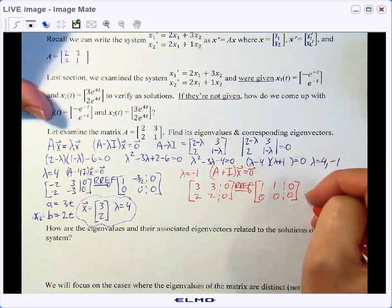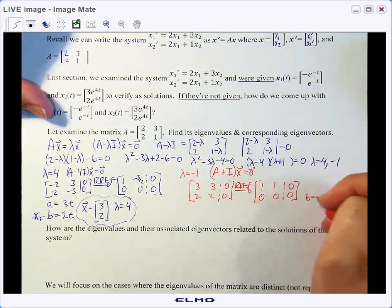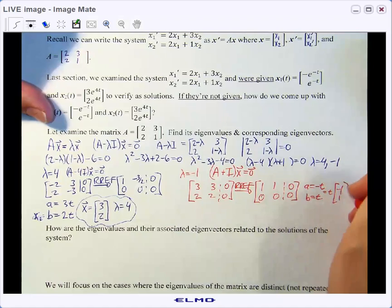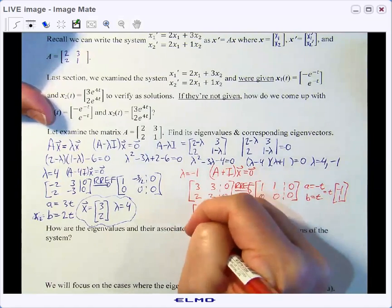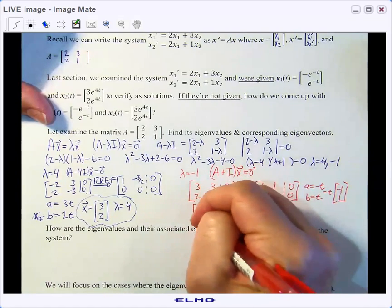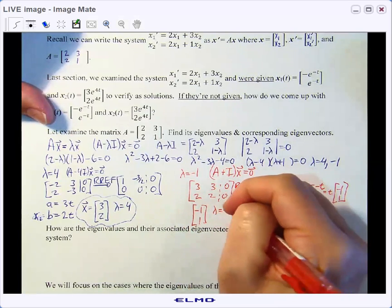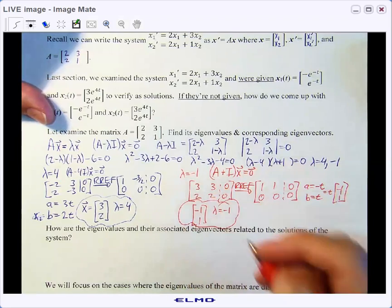Therefore, my eigenvector is going to be t and negative t. Or in other words, t times negative 1, 1. So our eigenvector here is negative 1, 1. And that corresponded with the eigenvalue of lambda is negative 1.